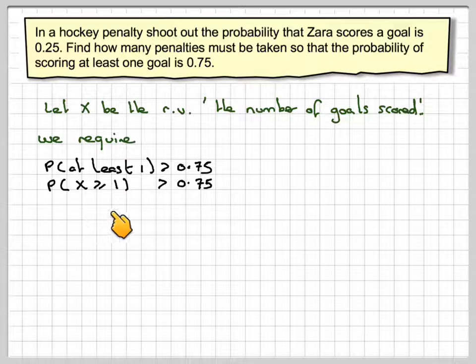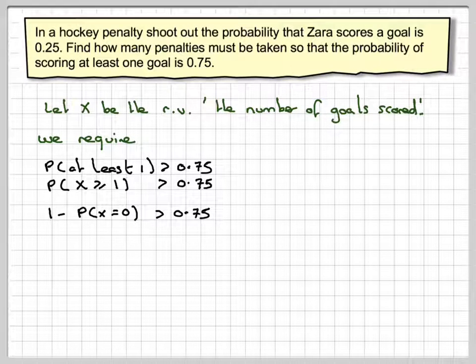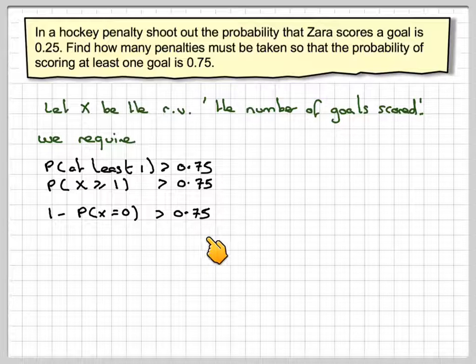And then to do X is greater than or equal to one, we need to do one minus the probability that X is equal to zero is greater than 0.75.